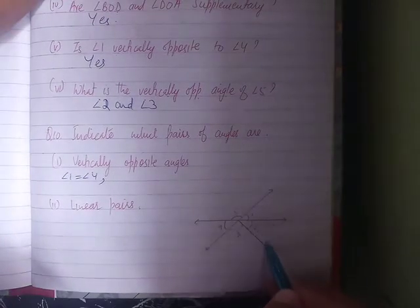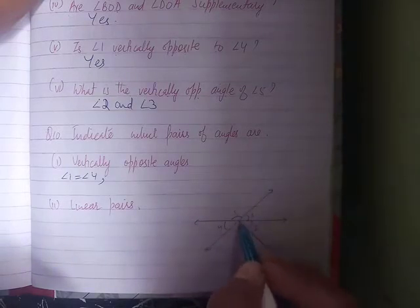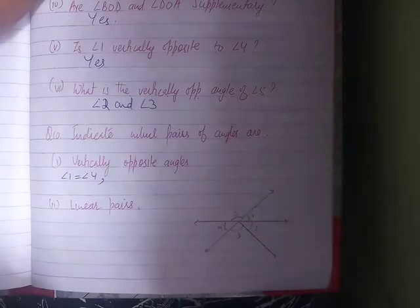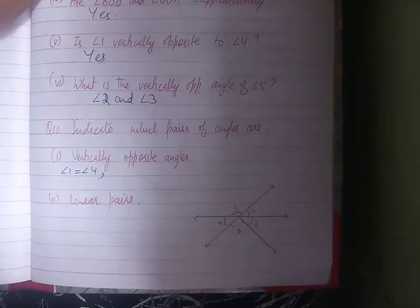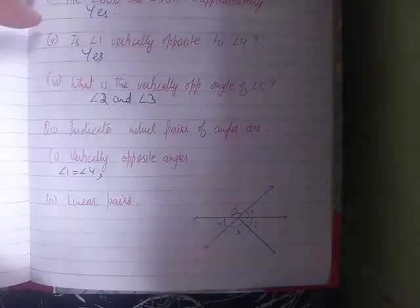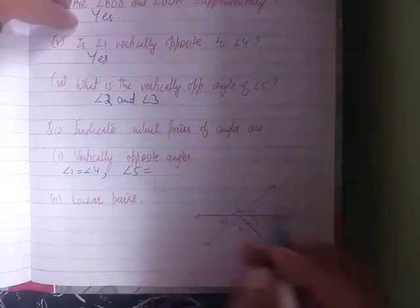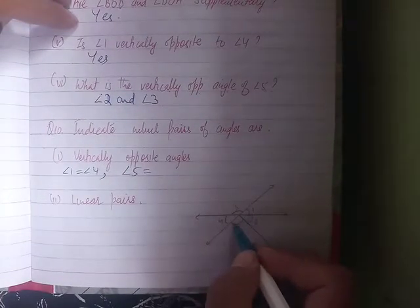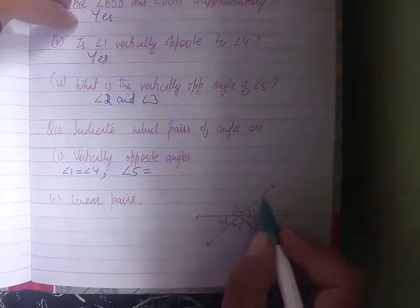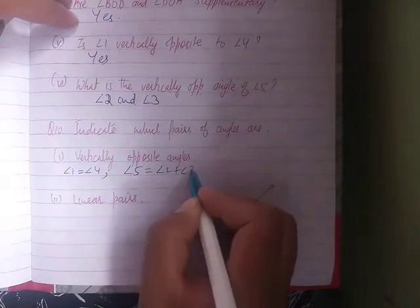So angle 2 equals angle 3. Next question number 10: indicate which pairs of angles are the following. First, vertically opposite angles. Angle 1 and angle 4. Angle 2 and angle 3. Supplementary angles: angle 2 plus angle 3.